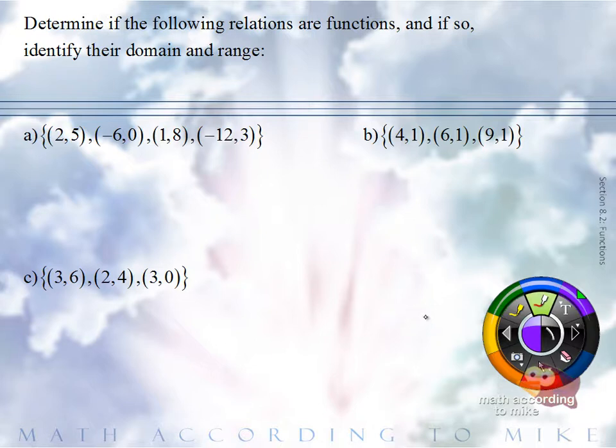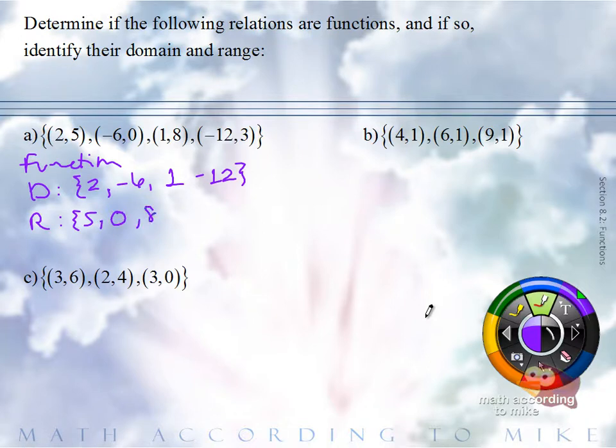So since we have a function here, let's find the domain and the range. The domain is the set of all values of the independent variable. What are those numbers? 2, negative 6, 1, negative 12. You do not have to write these in any specific order. If you want to put them in increasing or decreasing order, that's fine, but not necessary. Range. Done.